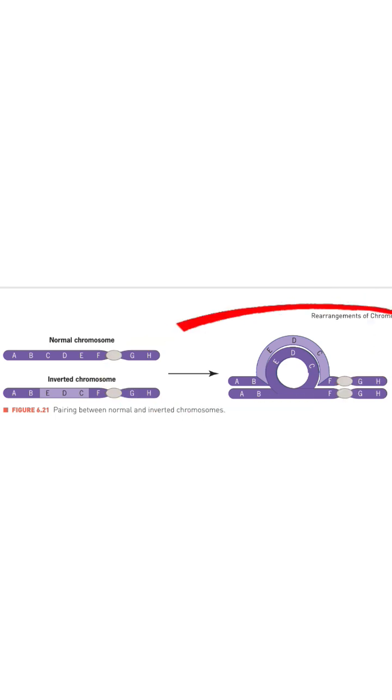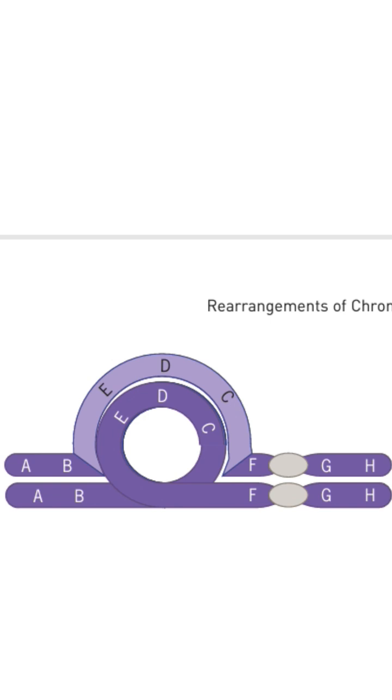In practice, either the inverted or non-inverted chromosome can form the loop to maximize pairing between them. However, near the end of the inversion, the chromosome must stretch and there is a tendency for some desynapsis.